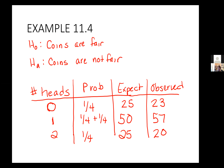Now I'm going to conduct the test based on this data. The number of degrees of freedom is the number of categories I have, which is 3 minus 1 = 2. Since I'm looking at the number of heads I get in 100 flips of 2 coins, I have three categories: no heads, 1 head, 2 heads. Degrees of freedom is 2. Let's go to our calculators.